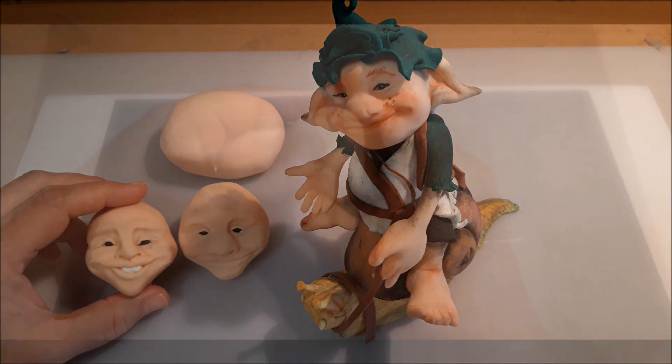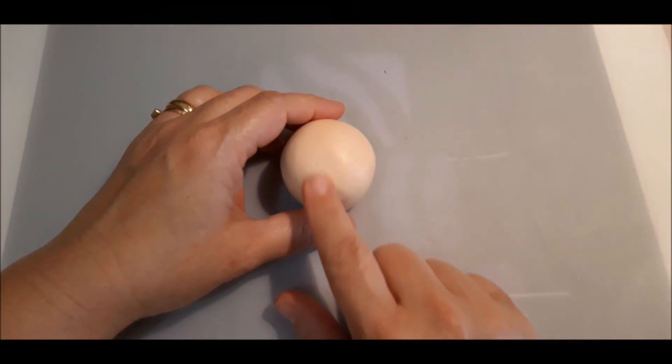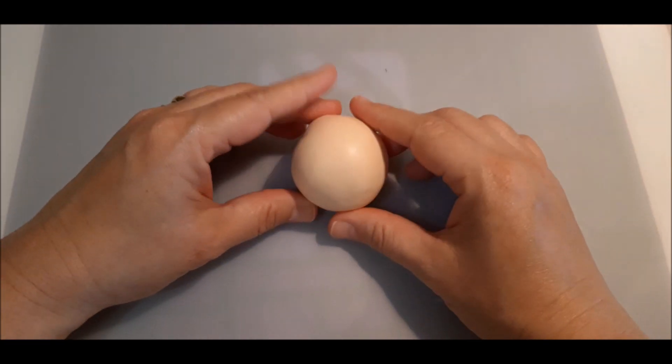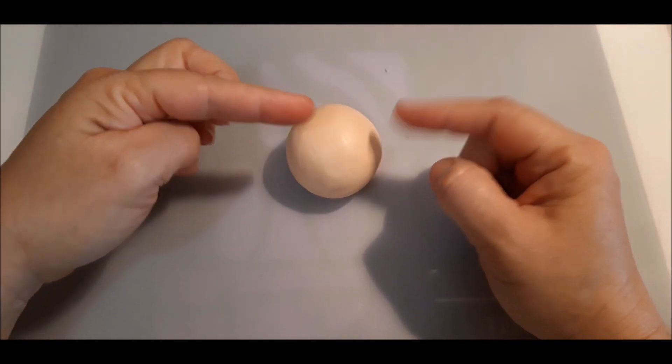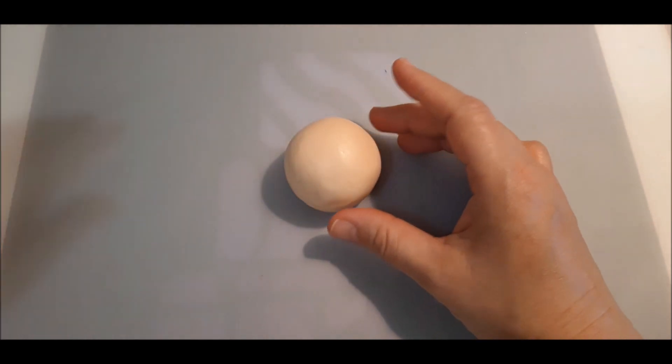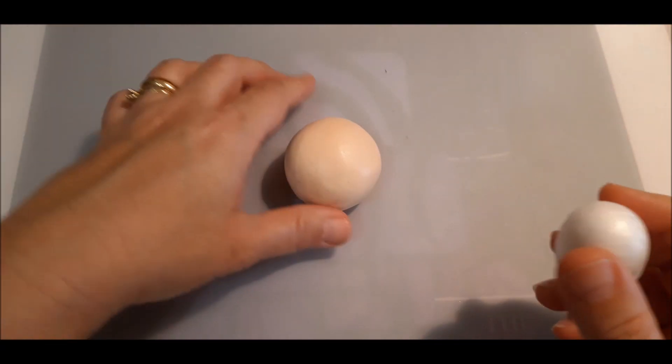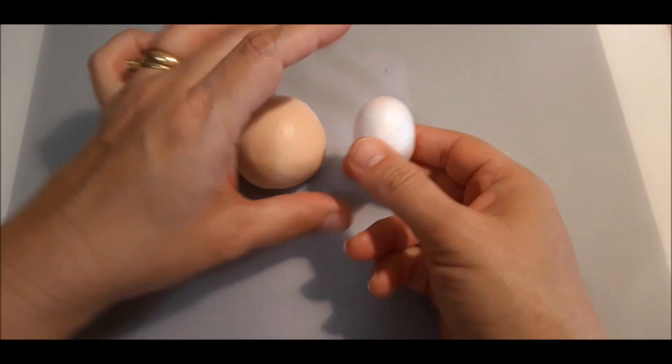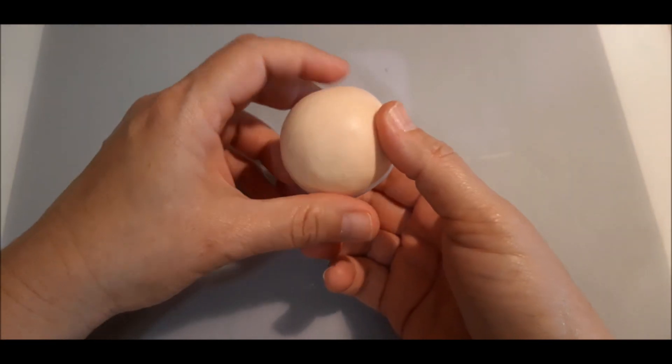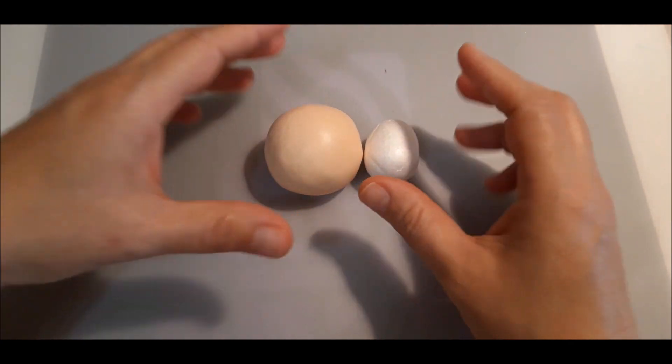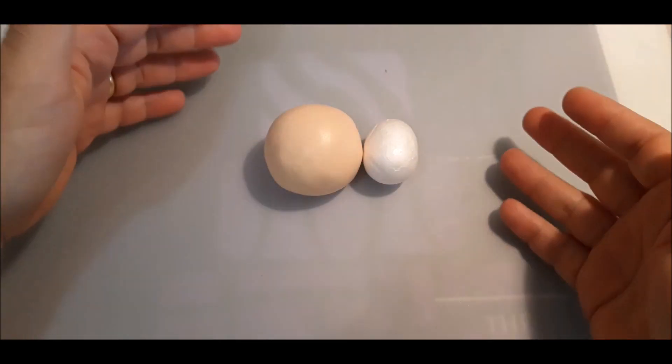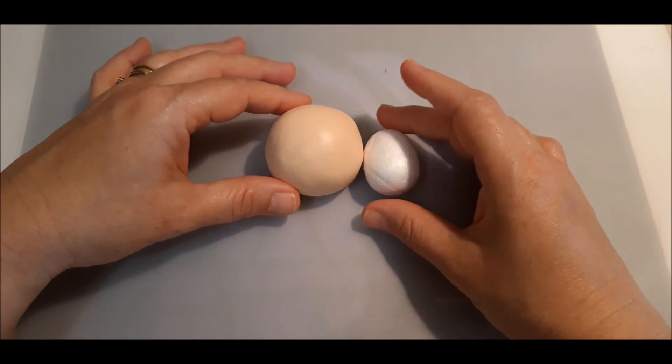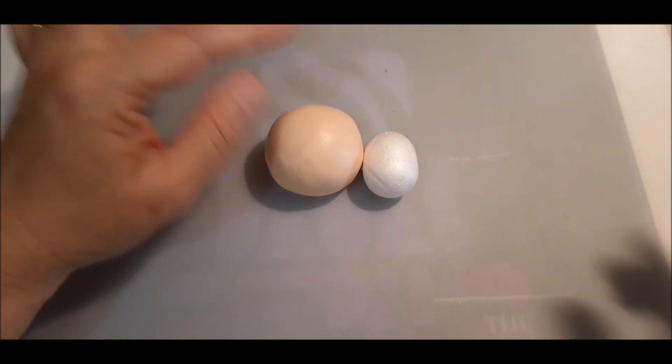For this face I'm using sugar paste, very light skin color. Actually it's the one that you buy already made and I knead it together with some white sugar paste. I'm also going to use for this one a little support, a little egg shape of styrofoam to put inside the face so it will give it more support. So when I create my whole gnome, I will have extra support on the head.